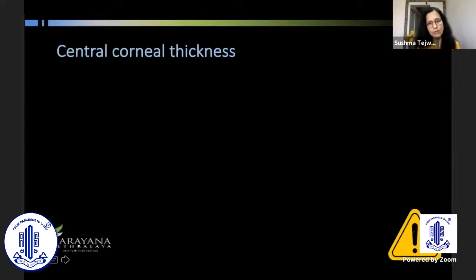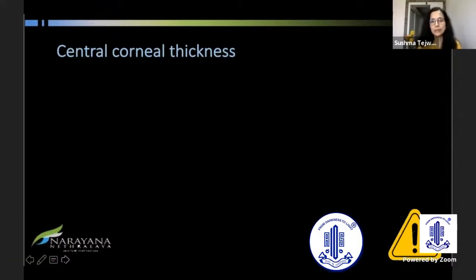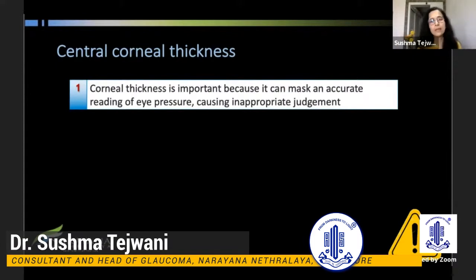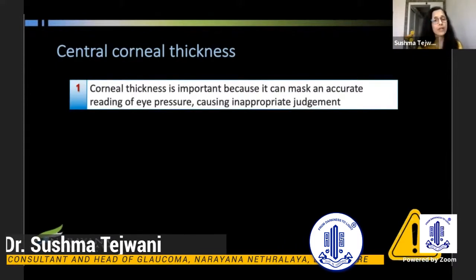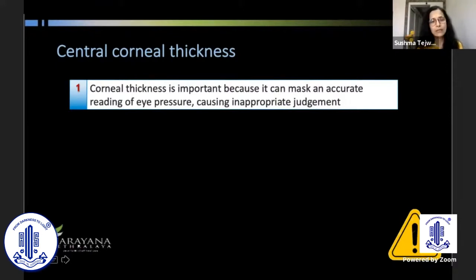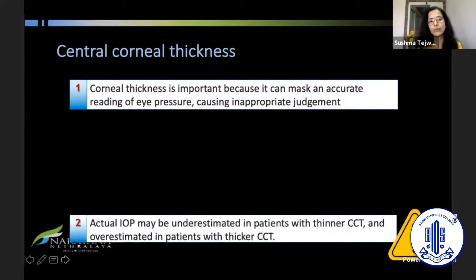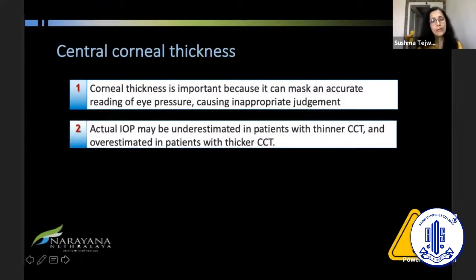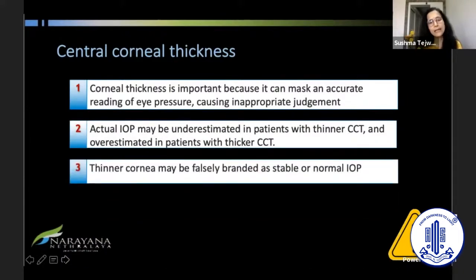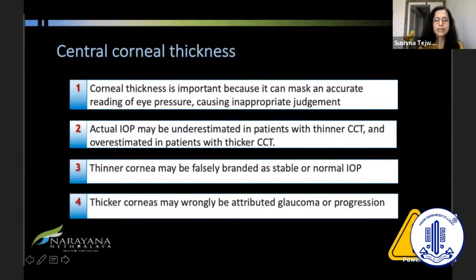Central corneal thickness is important to check because it can mask an inaccurate reading of eye pressure, leading to inappropriate judgment. Actual IOP may be underestimated if you have a thin cornea and overestimated in patients with a thicker cornea. So you may label a patient with a thinner cornea as normal, and thicker corneas may be wrongly attributed as glaucoma or progression.